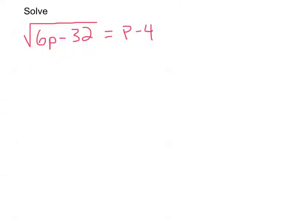Okay, on this one we're asked to solve this radical equation. The first step that we want to do is to get rid of this square root symbol. And the way that we do that is to square both sides.